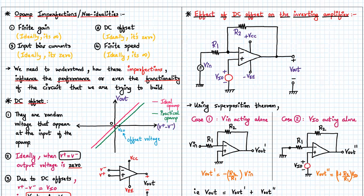So far we have considered ideal op-amp parameters for all our analysis. We have considered that the input bias currents are almost zero, and there is zero DC offset voltage.